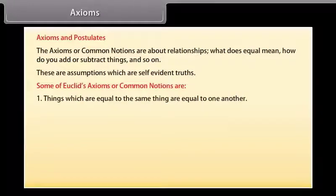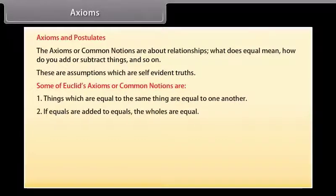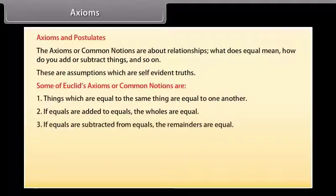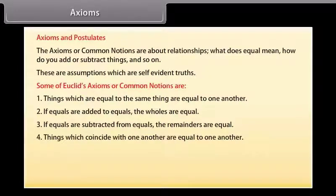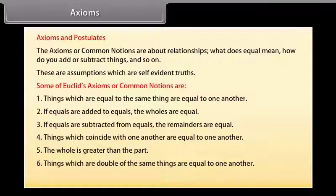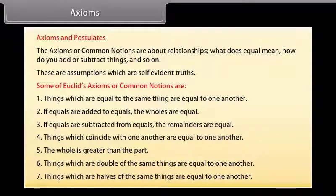Some of Euclid's axioms or common notions are: 1. Things which are equal to the same thing are equal to one another. 2. If equals are added to equals, the wholes are equal. 3. If equals are subtracted from equals, the remainders are equal. 4. Things which coincide with one another are equal to one another. 5. The whole is greater than the part. 6. Things which are double of the same things are equal to one another. 7. Things which are halves of the same things are equal to one another.